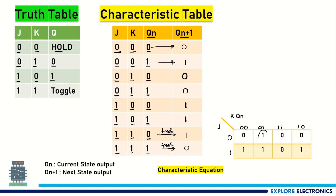Let us group these together. These two form one group and this one can be grouped with this one. Now looking at the expression for this group — let me write it as Qn+1 equals — this vertical group will have J cancel out, giving K̄·Qn.